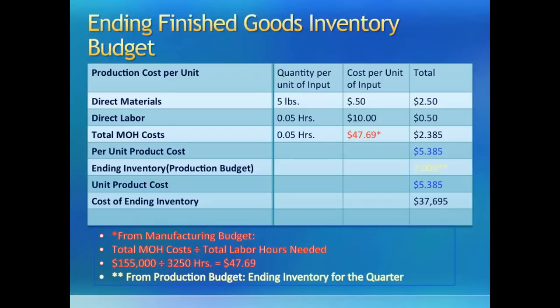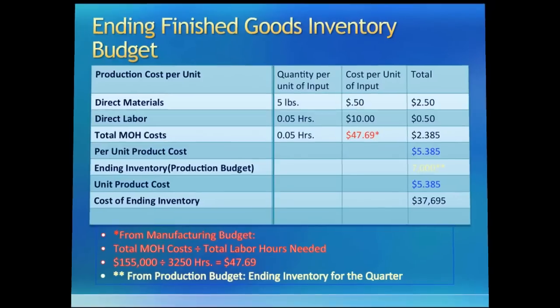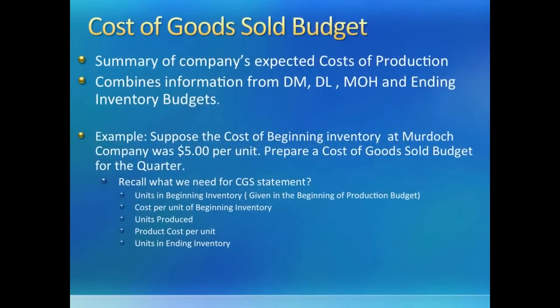We need this number in the income statement as well as in our projected balance sheet. Since we will be making an income statement soon, it is helpful to make a cost of goods sold statement first to figure out the company's expected costs of production. Costs of production, or product cost, or manufacturing cost — whatever the name may be — is always a total of direct material, direct labor, and manufacturing overhead costs.